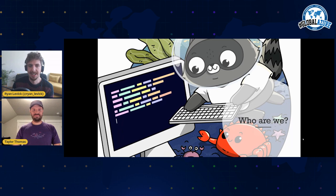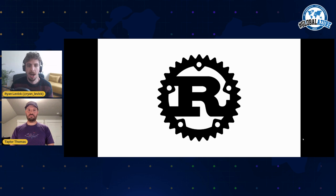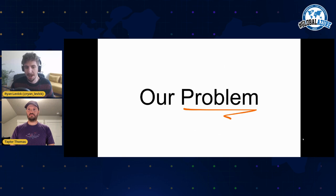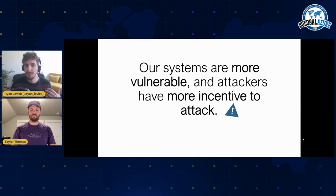So we're talking about the Rust programming language today. We're going to be talking about how Rust has come to find a home at Microsoft, how we think about Rust at Microsoft, and where Rust fits in the cloud space today. To begin with that, we're going to talk about Microsoft's problem — and it's not just our problem. It's really an industry-wide problem: our systems are more interconnected and performing more and more tasks every single day.